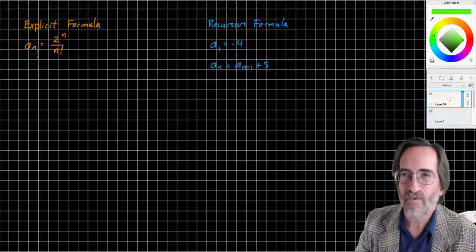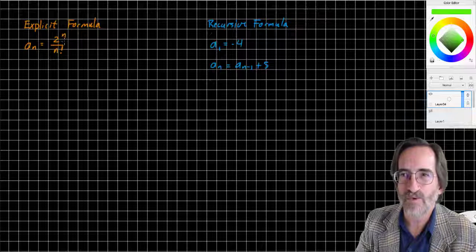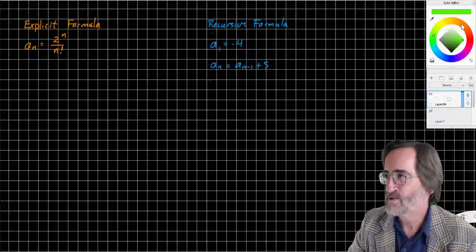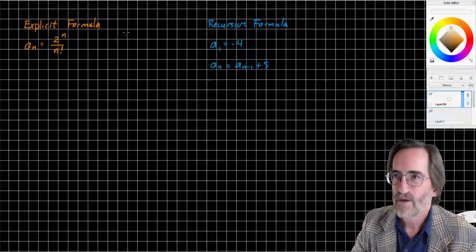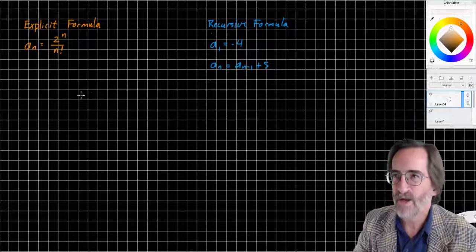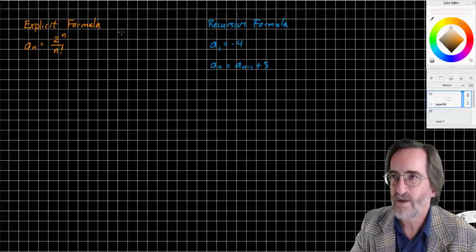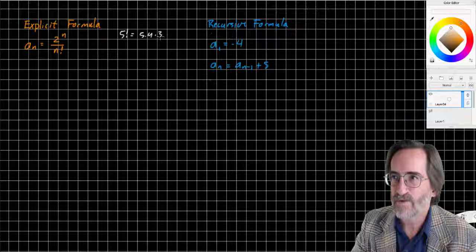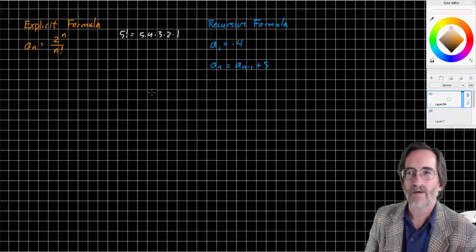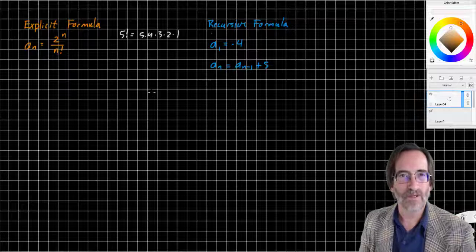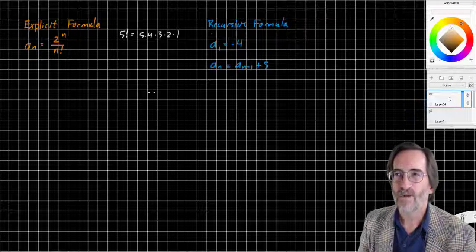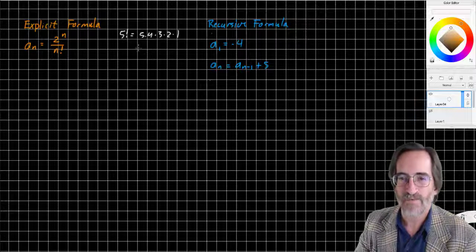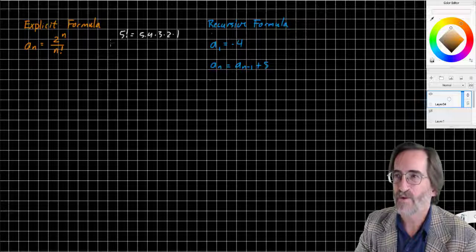In the case of an explicit formula, we have a formula A sub n equals 2 to the n over n factorial. And I need to introduce the concept of factorial. Let's say I had 5 factorial. That would be 5 times 4 times 3 times 2 times 1. Factorial means to multiply the whole number by every number, every whole number below it, counting down by 1s.